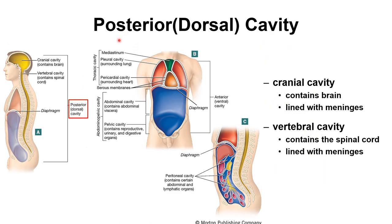Focusing on the posterior cavity: it contains the cranial cavity up top, which contains your brain, and the vertebral cavity below, which contains the spinal cord.